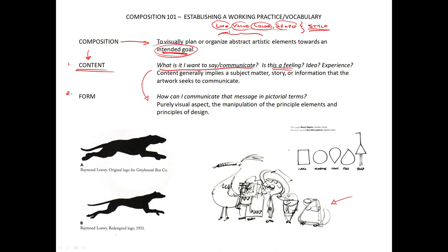So in order to create a composition, we have to know what our content is. And then two, we have to be able to communicate that content with line, value, color, and shape.